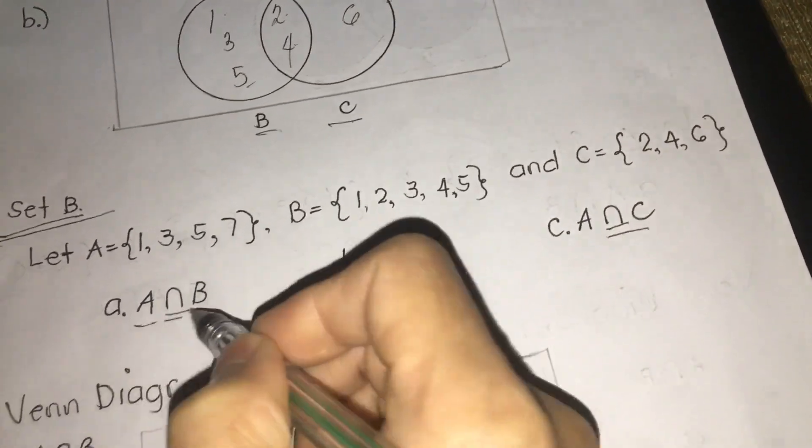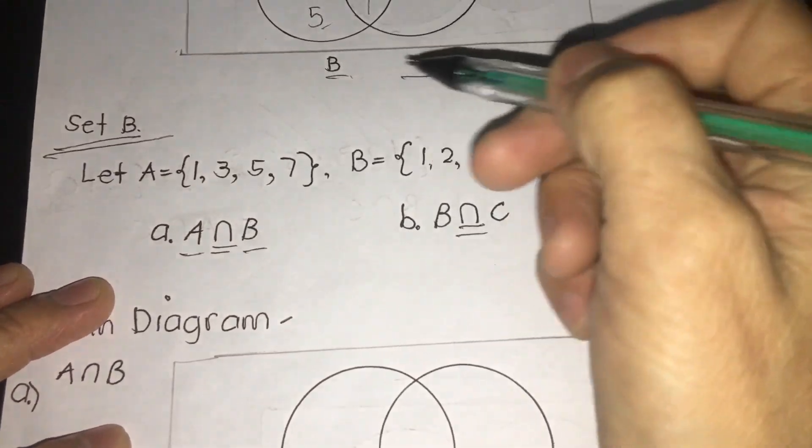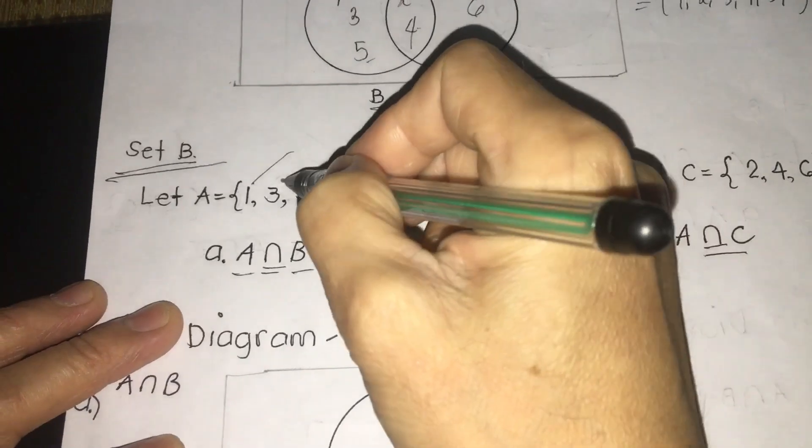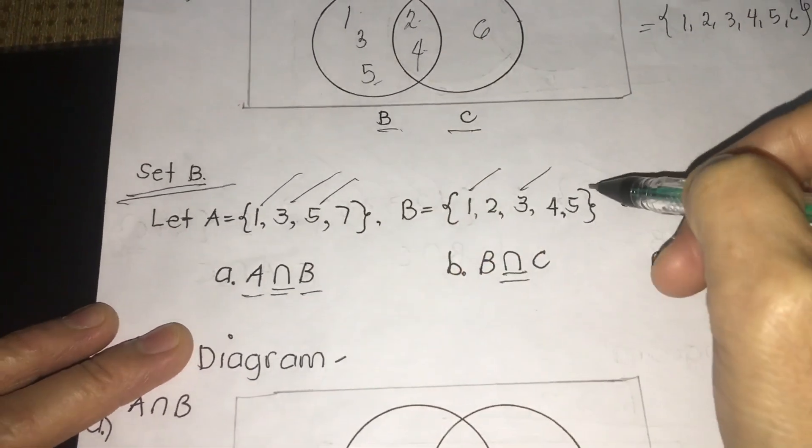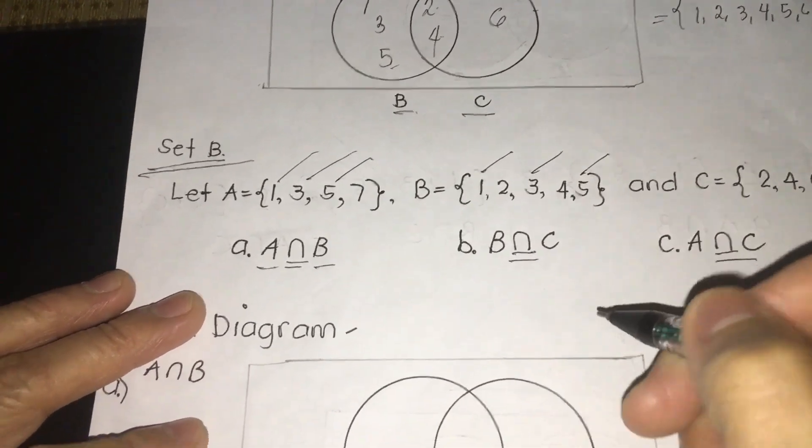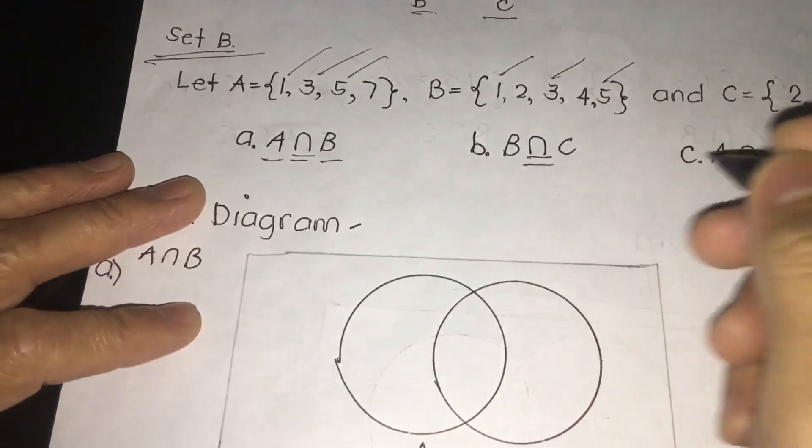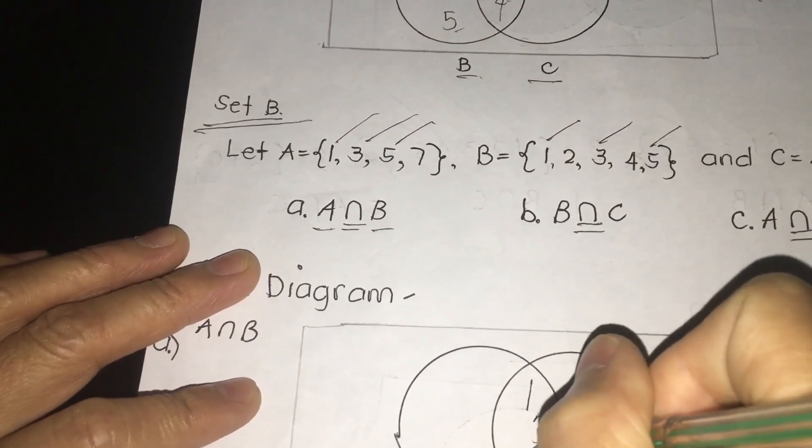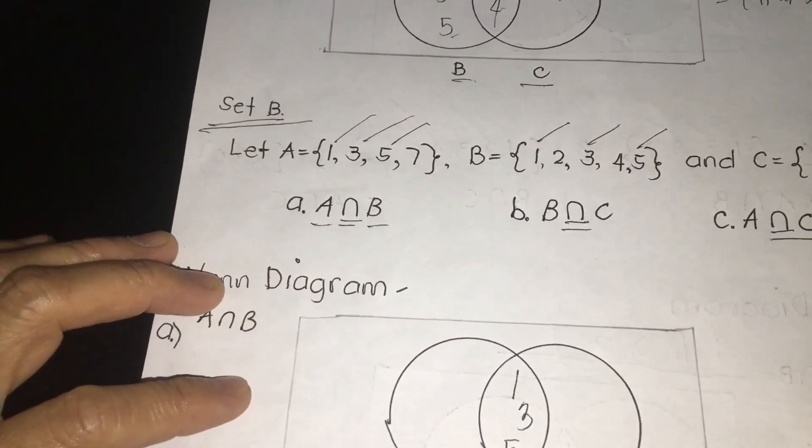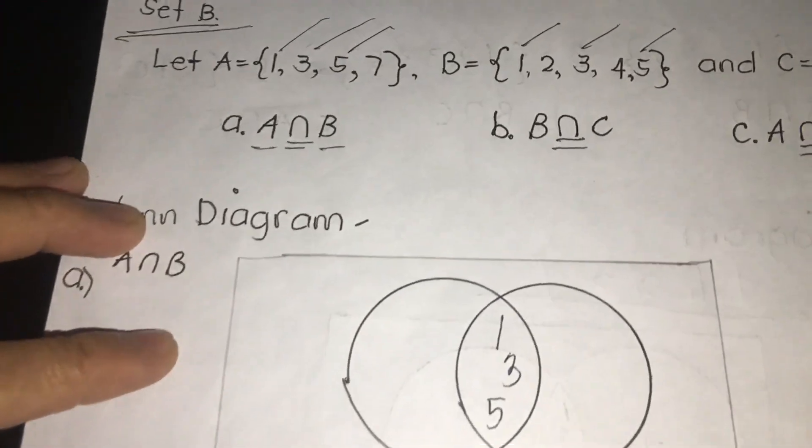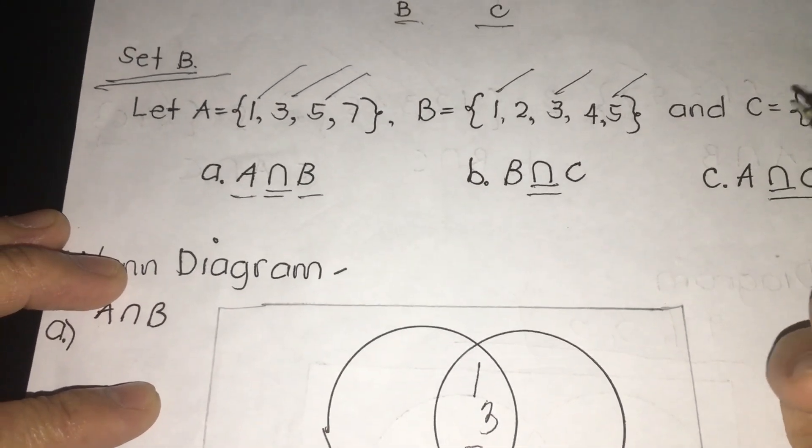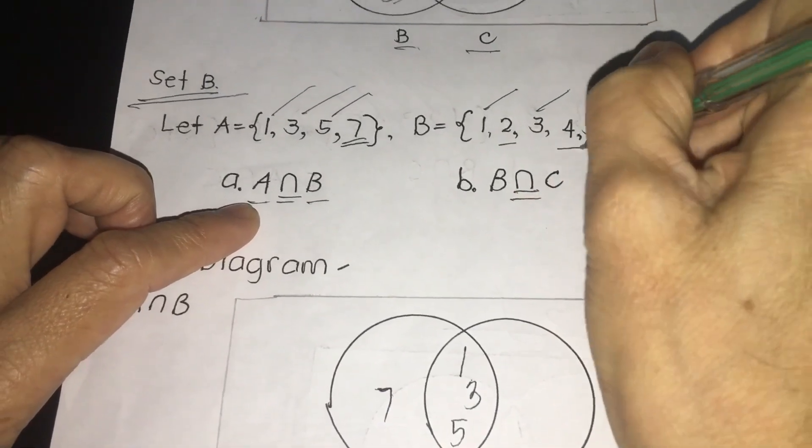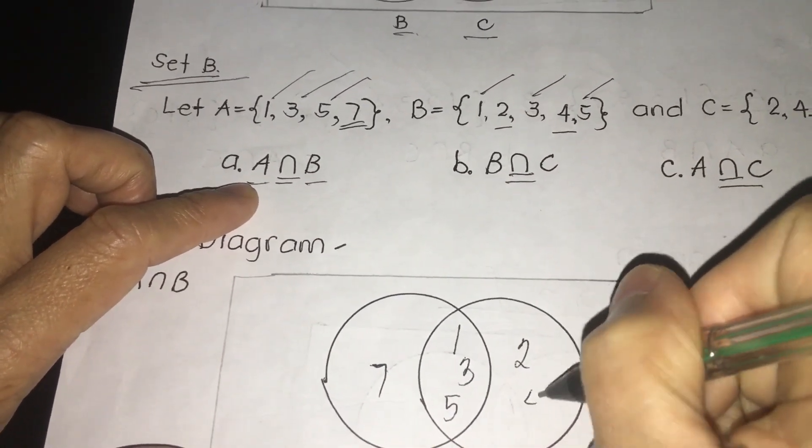We have A and B. We are going to start. Common elements first. We have here 1, 1, both A and B. Next, 3. Then, 5. What we're going to do? We are going to write the common elements at the center rather, of the circle. We're going to write first in our Venn diagram. Just easy. 1, 3, 5. This is our solution from the definition that we list all the elements that are both in A and B. Next, in letter A, of course, is 7. Then, 2 and 4.